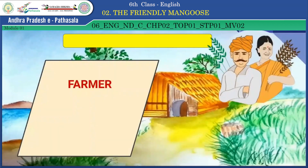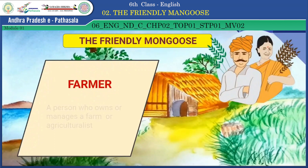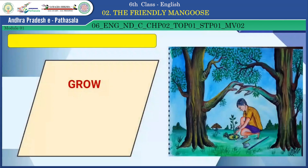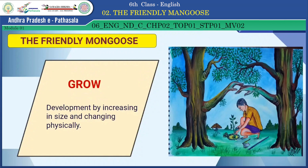Let us know about the new words of this part. Farmer means a person who owns or manages a farm, or agriculturist. Grow means development by increasing in size and changing physically. Look at this picture — a boy is planting a plant. Nearby, there are two big trees. On some other day, that plant will also grow like the trees.